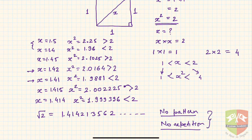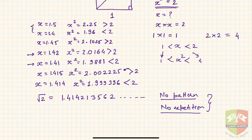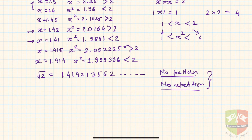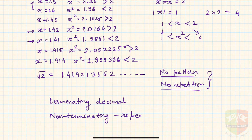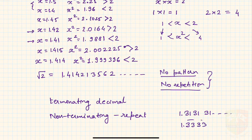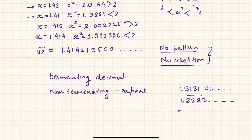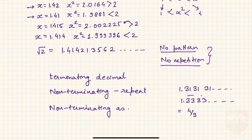So far we had seen two types of decimal representations: terminating decimals, and non-terminating but repeating decimals — for example, 1.3131... or 1.3333..., which is like 4 upon 3. But now we have a new case: non-terminating as well as non-repeating decimal representation.